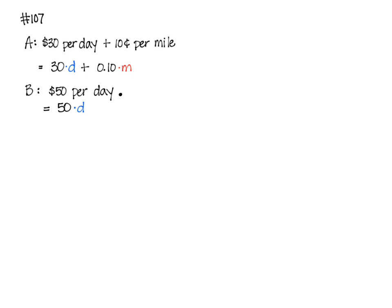The question was specifically, for what range of miles will Plan B save you money? Meaning, when is Plan B less than A? When will it save you money?